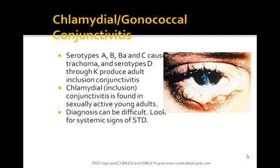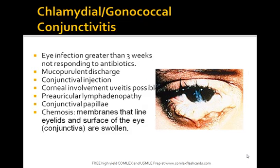With chlamydial conjunctivitis, you can see typical inclusion bodies. It's commonly found in sexually active young adults, and you want to look for systemic signs of sexually transmitted disease. There are several serotypes — A, B, and C — that cause trachoma, and serotypes D through K produce adult inclusion conjunctivitis.